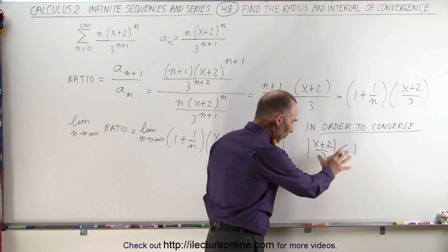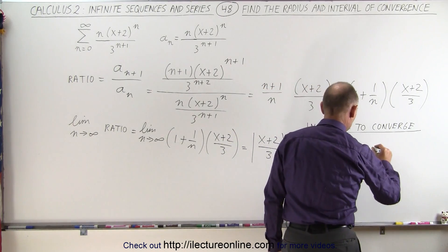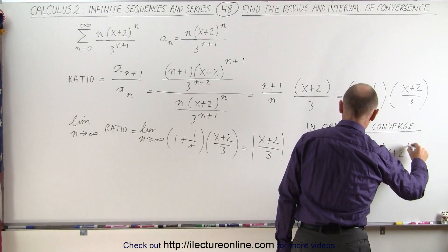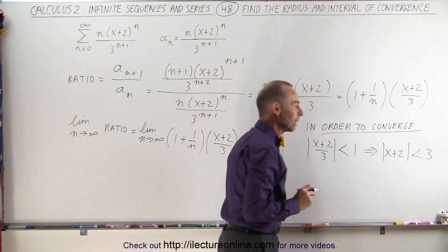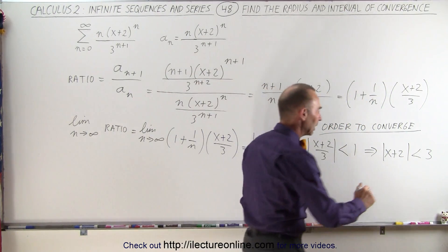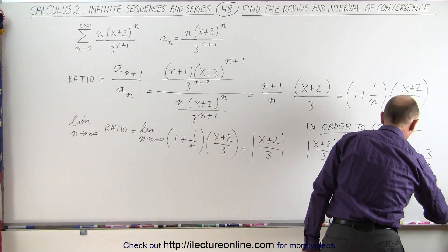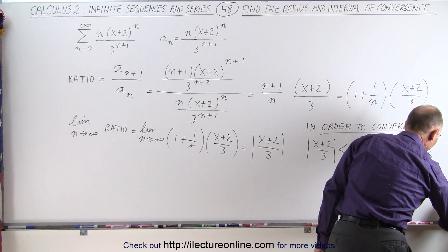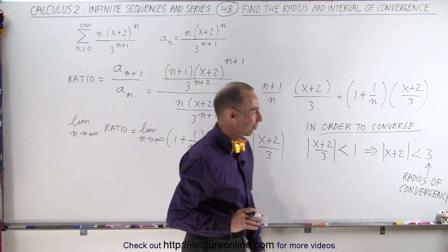And now multiply both sides by 3, we get the absolute value of (x+2) must be less than 3. Now the number 3 here, that is what we call the radius of convergence. And in just a moment we will see what that actually means.